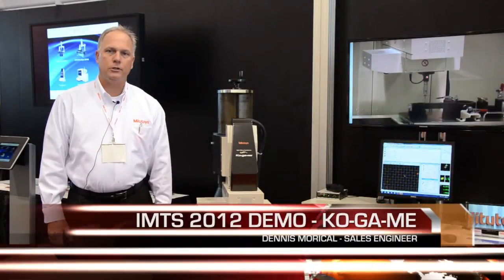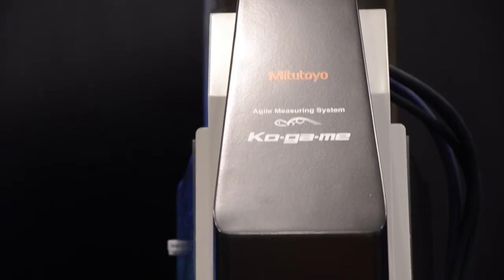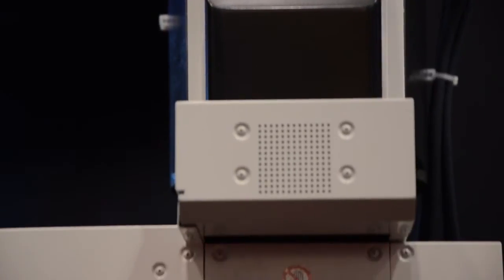My name is Dennis Morickle. I'm a sales engineer for Mitsutoyo America. I'm here today to introduce a new product, the Kogami. The Kogami is Mitsutoyo's new agile measuring system.